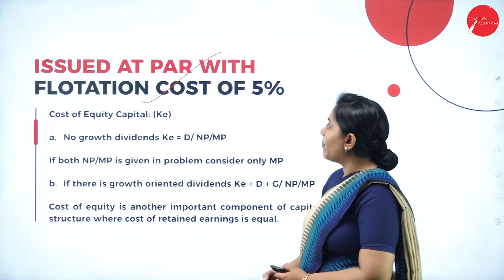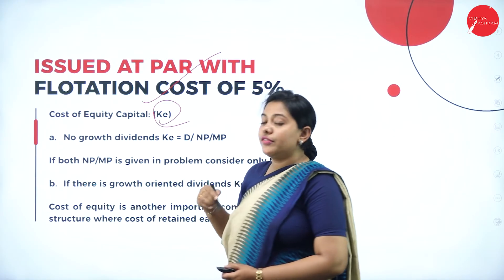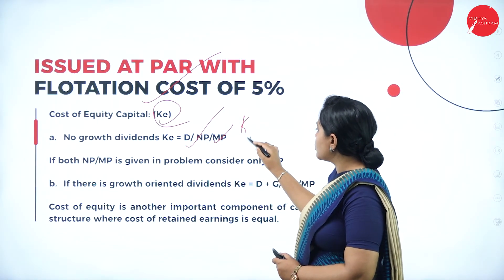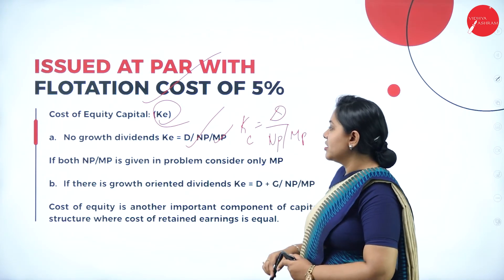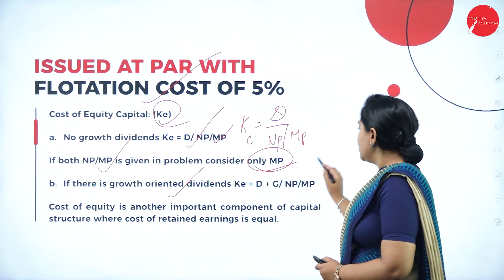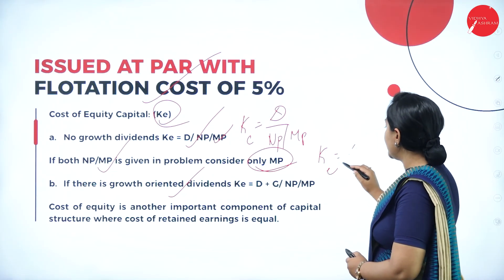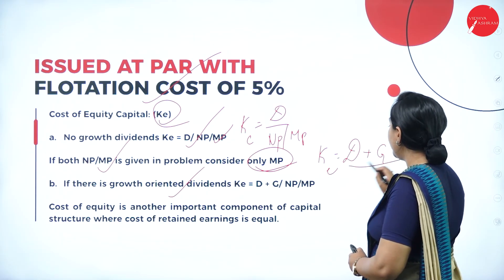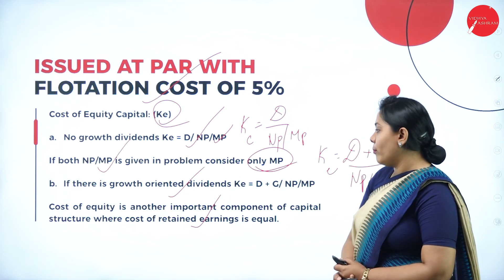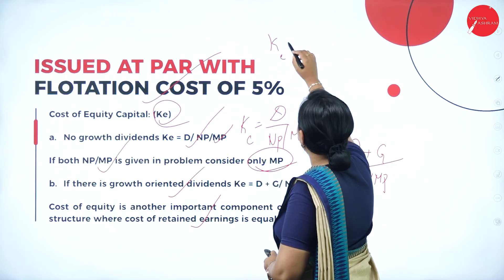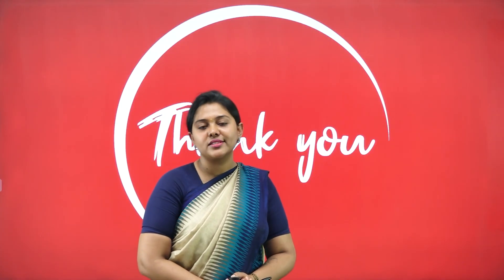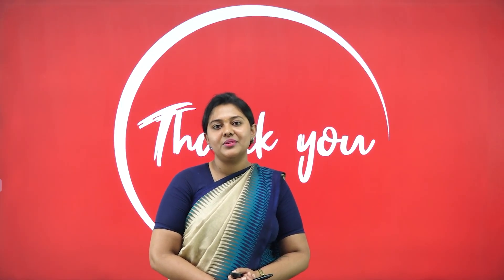In the next class, we will take up problems on cost of equity capital. When the growth rate is not given, the formula is cost of equity equals dividend divided by net proceeds or market price. When both net proceeds and market price are given, consider only market price. If there is a growth-oriented dividend, the formula changes to cost of equity equals dividend plus growth divided by net proceeds or market price. Cost of retained earnings is equal to cost of equity. That's it for today's class. Hope the session was interesting and fruitful. Smile is the biggest jewel you can wear. Keep smiling. Thank you.